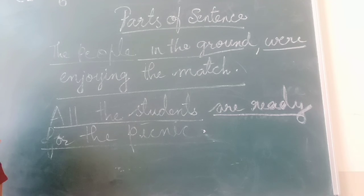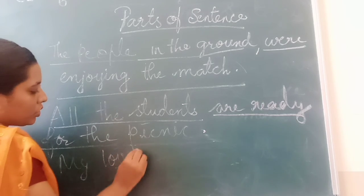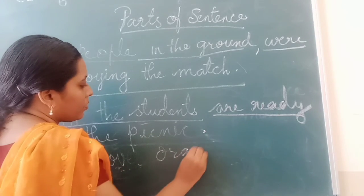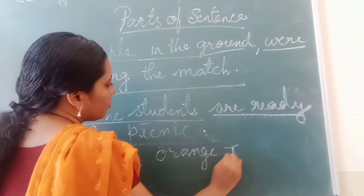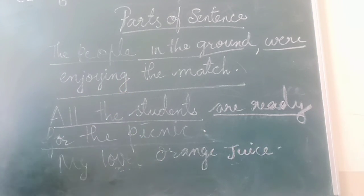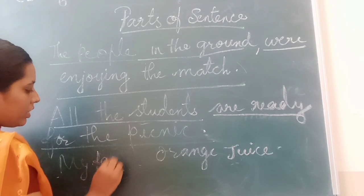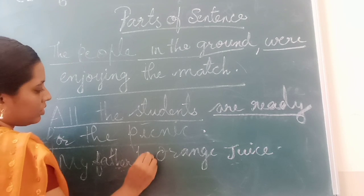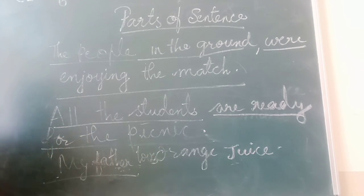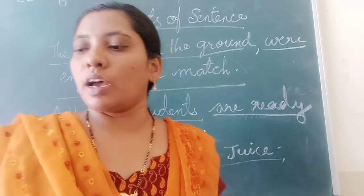One more example: 'My father loves orange juice.' Here the subject is 'my father,' and the predicate is 'loves orange juice'. So here we wind up for Class 4 for this month.